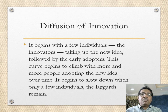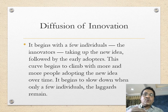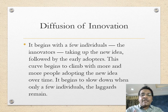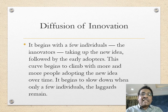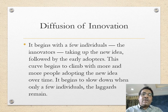Diffusion of innovation begins with a few individuals — the innovators — people who take up the new idea first. This is followed by early adopters, then the curve begins to climb as more people adopt. We'll discuss concepts like critical mass, why change agents matter, and why innovators are so important at kick-starting the process. We'll also cover the characteristics of innovators, early adopters, late adopters, and laggards.